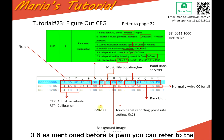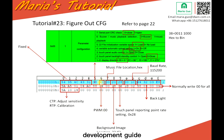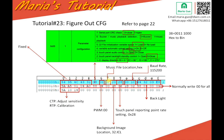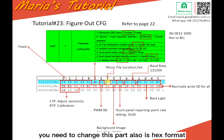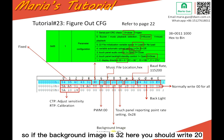And here, there is section six — as mentioned before, this is PWM. You can refer to the development guide. We normally write 00. And then section seven is the music file location — if you want to touch the panel and have some music sound, you need to change this part; it's also in hex format. And here, section eight is the background image. So if the background image is number 32, here you should write 20.